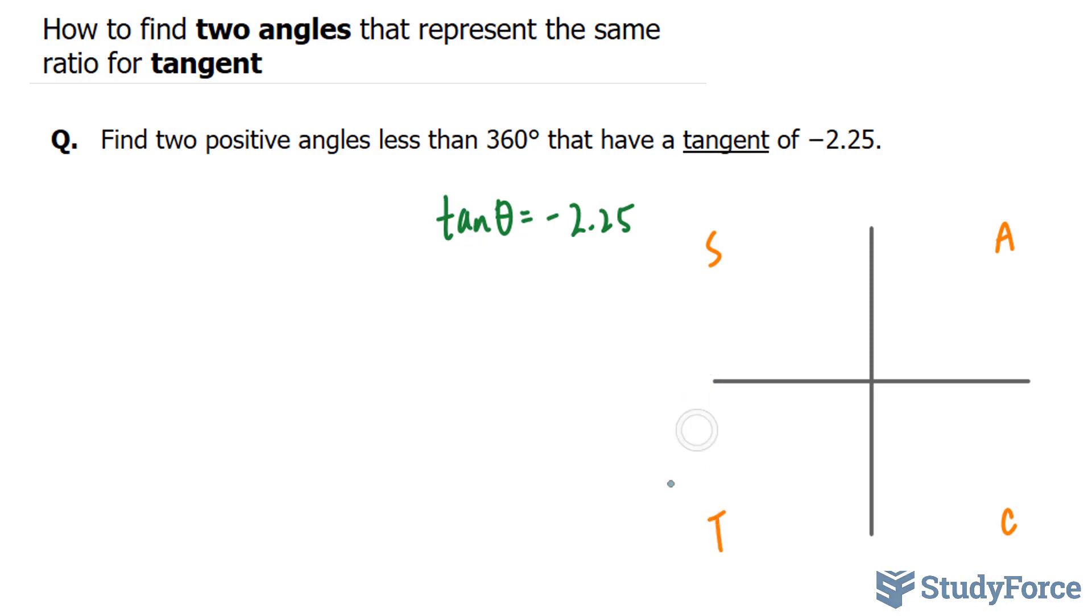This tells us that tangent is positive in this quadrant and in this quadrant, and therefore it is negative here and here. Our job is to find out what this angle is and what this angle is. And by finding those angles and substituting them back into this trigonometric function, we should get negative 2.25.